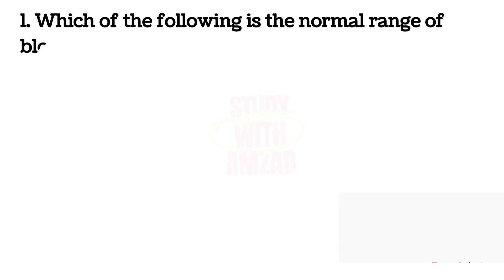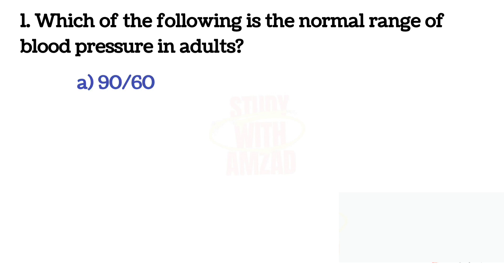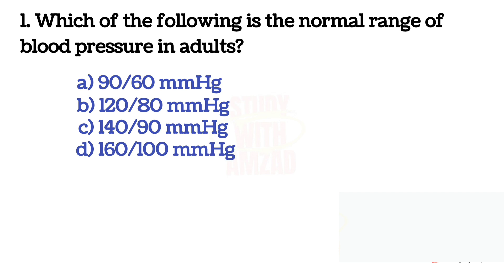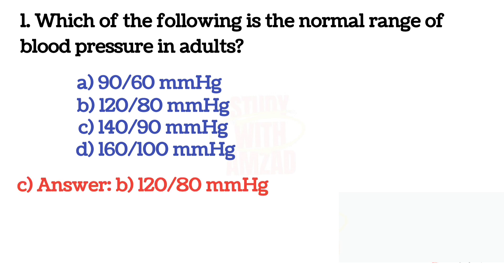Which of the following is the normal range of blood pressure in adults? The correct answer is B: 120/80 mmHg.